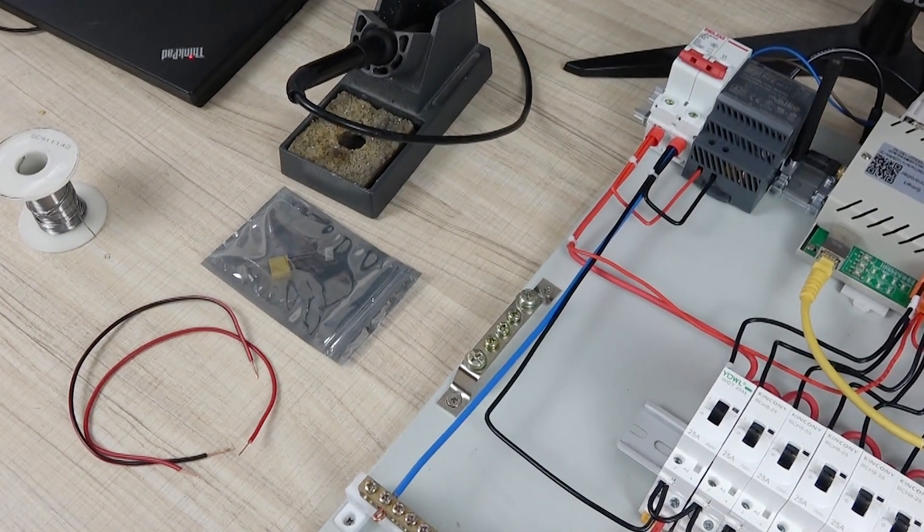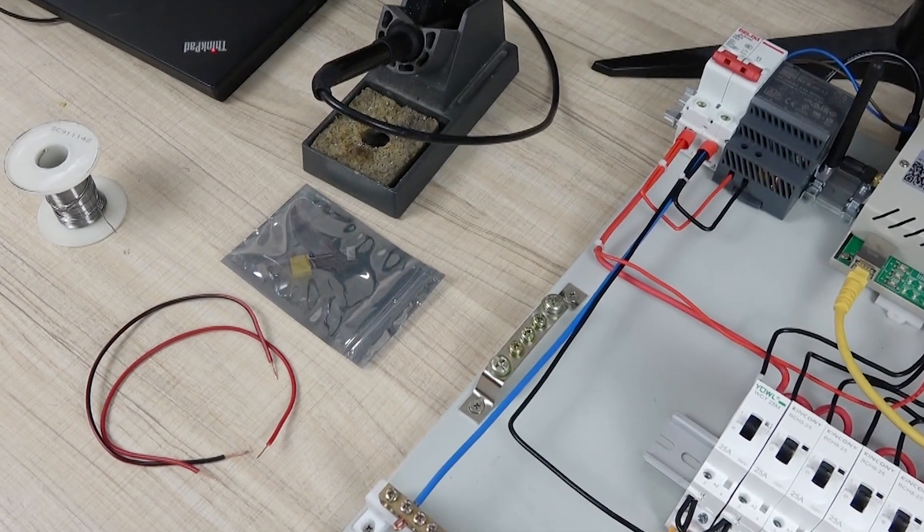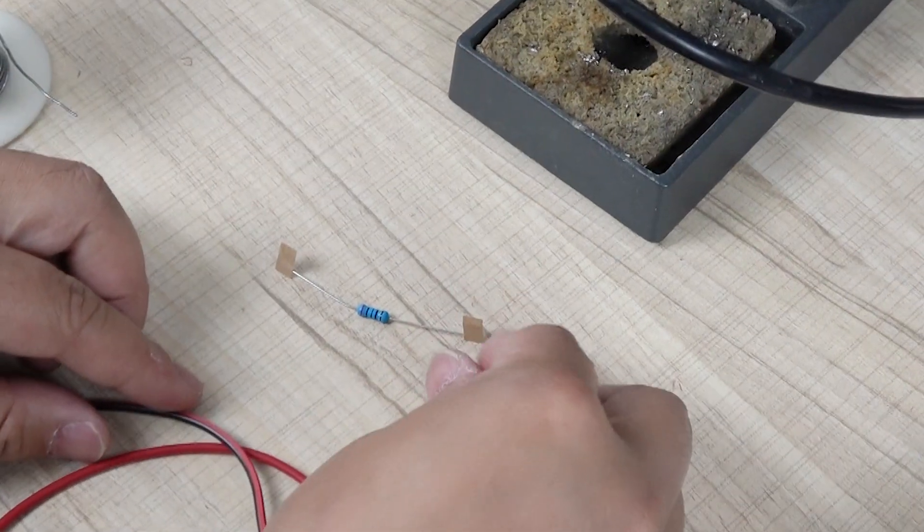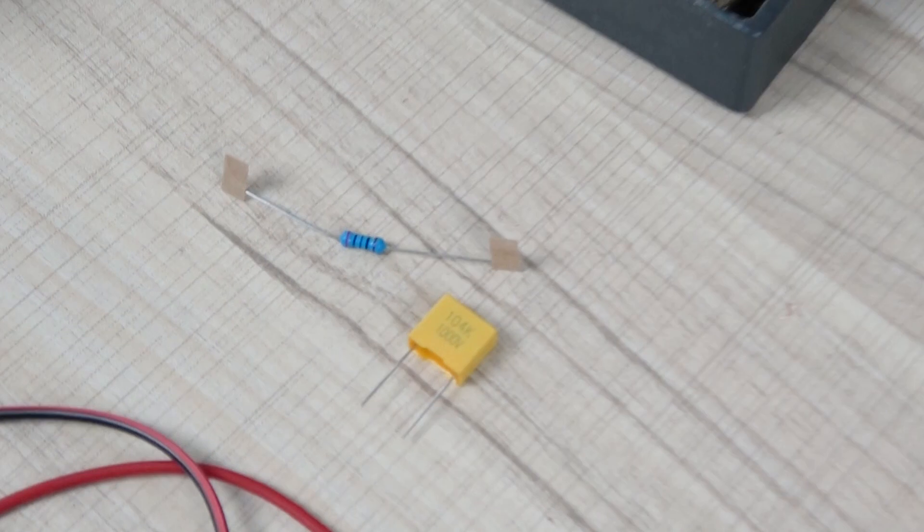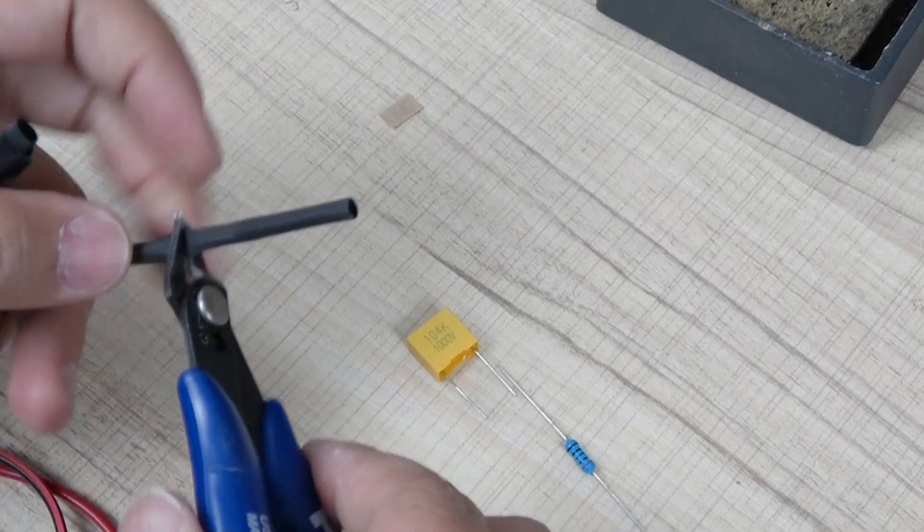Now we begin using the RC parts on the AC contactor to eliminate the interference. Let's begin with the two parts: the resistance and the electrical capacitor.